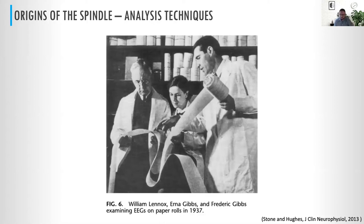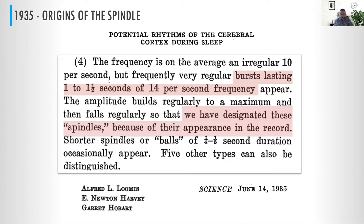Following these experiments, Loomis, Harvey, and Hobart published a paper in Science in 1935, in which they published observations about what they saw in the EEG. In particular, they noticed bursts lasting between one and one and a half seconds at about 14 Hz. They designated these as spindles because of their appearance in the record — as far as I know, this is the original coining of the term.